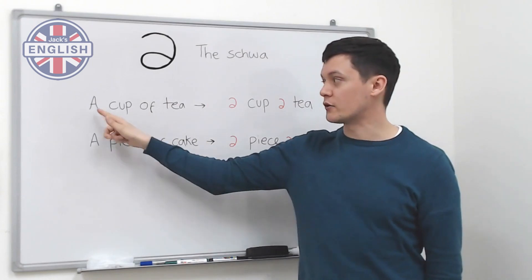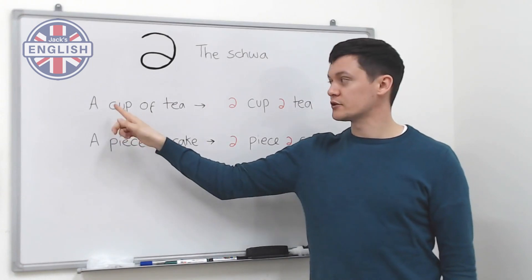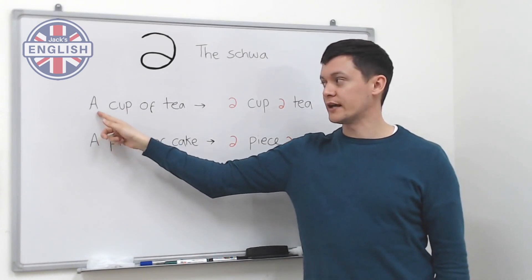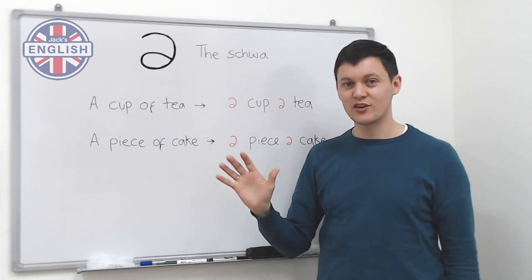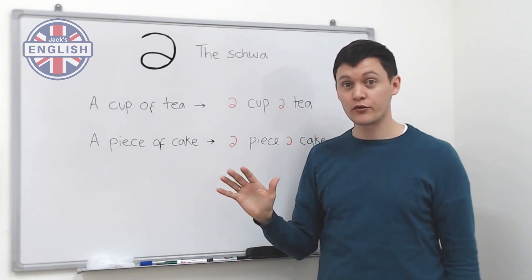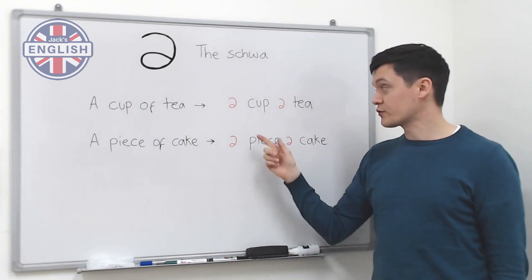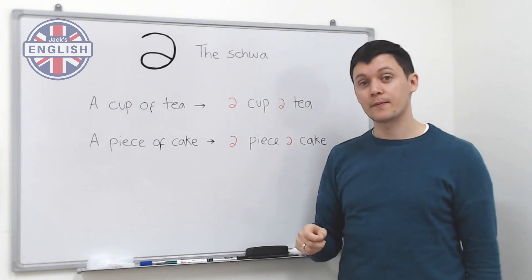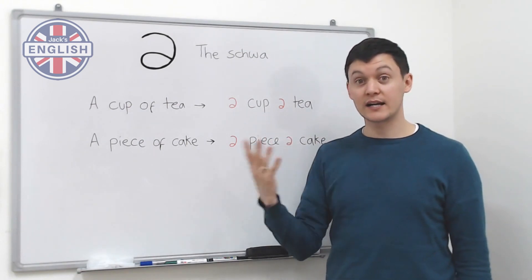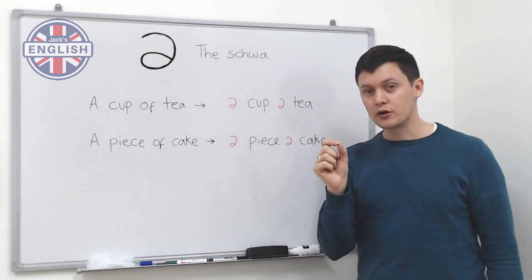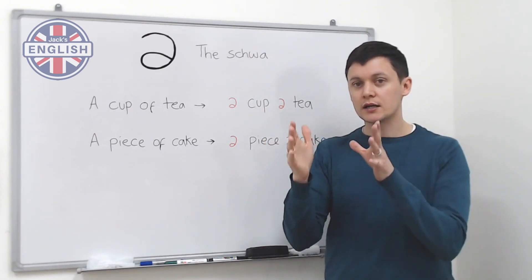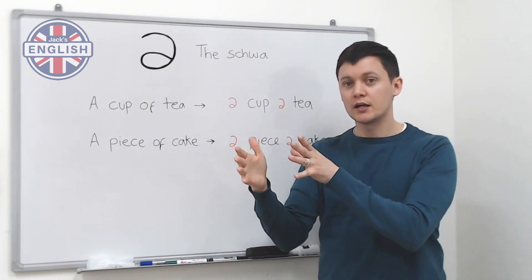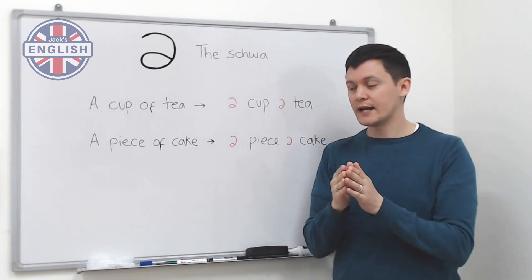These are grammar words — 'a' is an article and 'of' is a preposition. Because they're not so important, we just use a schwa sound instead. So we say 'a cup of tea' — 'I'd like a cup of tea, please.'